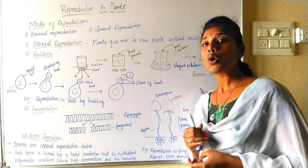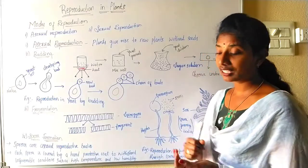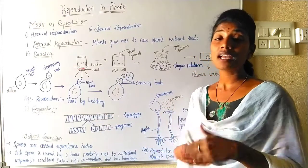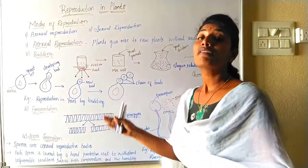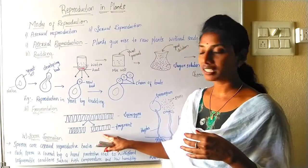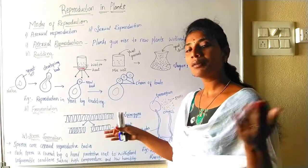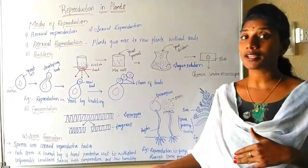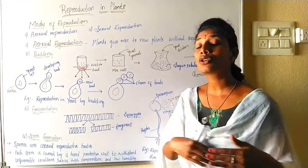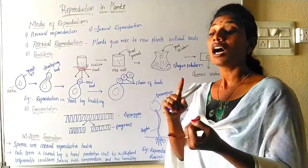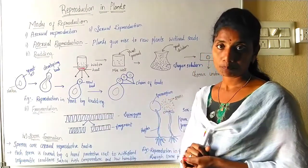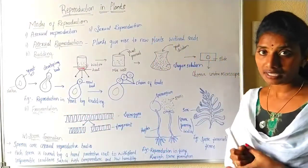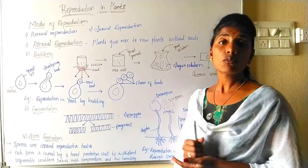So what does Spirogyra do? Whenever it gets favorable conditions — that means favorable nutrition and water supply — it will start multiplying very fast. It will split into fragments. Each fragment is a piece, and each piece will now act as a new Spirogyra. Within a very short period of time, you can see the growth of Spirogyra all over the place wherever water and nutrition are available. This is also a type of asexual mode of reproduction which Spirogyra involves, called fragmentation.